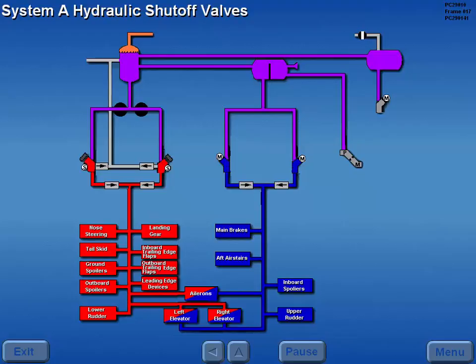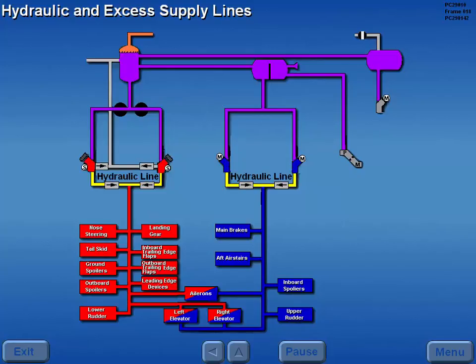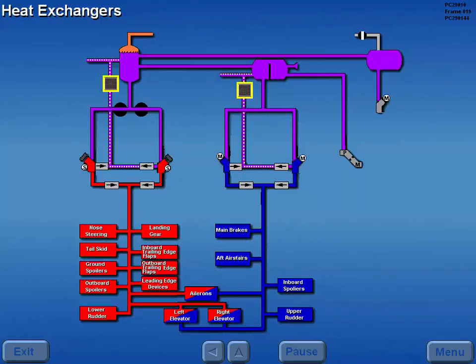Fluid from the System A reservoir to the engine-driven pumps is controlled by the fluid shutoff valves. When the System A or B pumps are operating, pressurized fluid flows from the respective pump through its common hydraulic line and a common excess supply line. Heat exchangers located in the number one and three fuel tanks cool System B and System A excess supply fluid, which is combined with System Component Return Fluid and re-deposited into the respective reservoir.